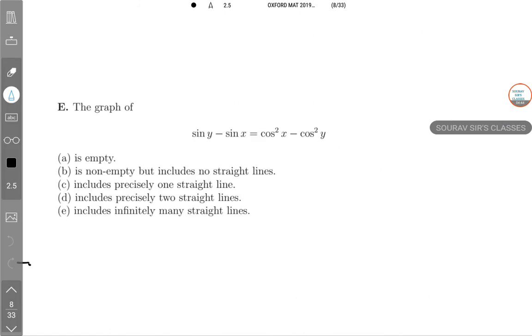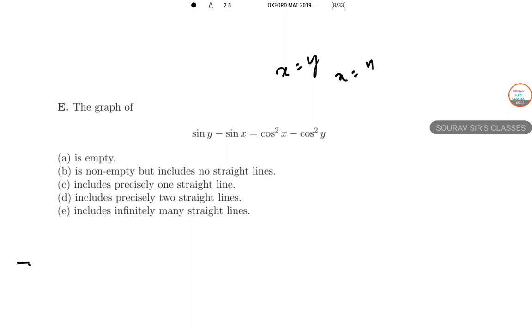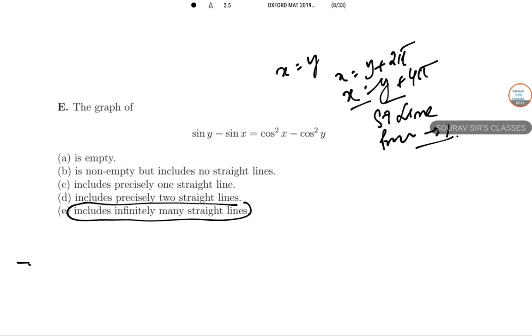Question E: they want you to draw the graph of sin y - sin x = cos²x - cos²y. This graph includes x = y, x = y + 2π (-360°), x = y + 4π (720°), and so on. This includes infinitely many straight lines: x = y is a straight line with power 1, and then the pattern continues.